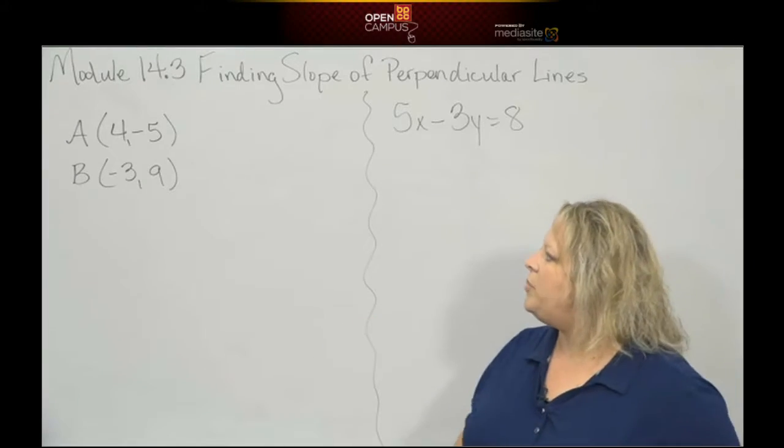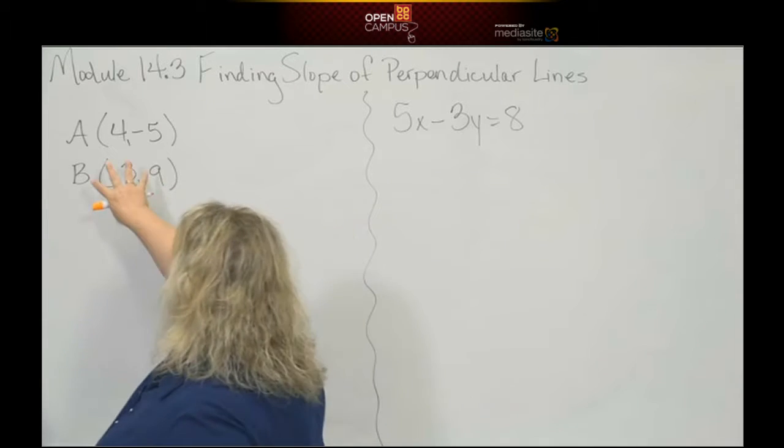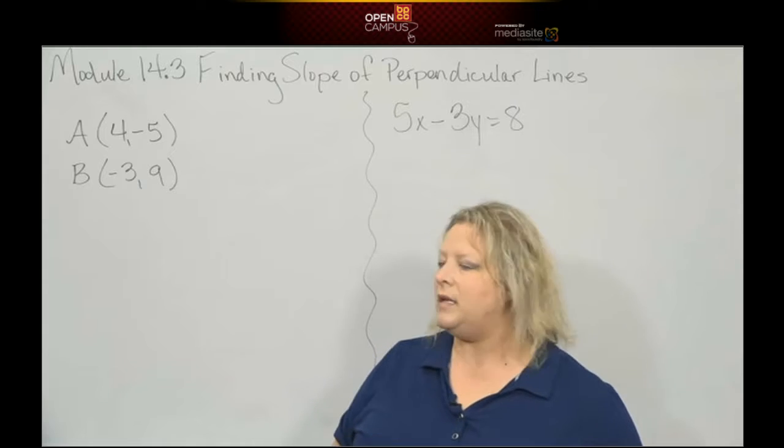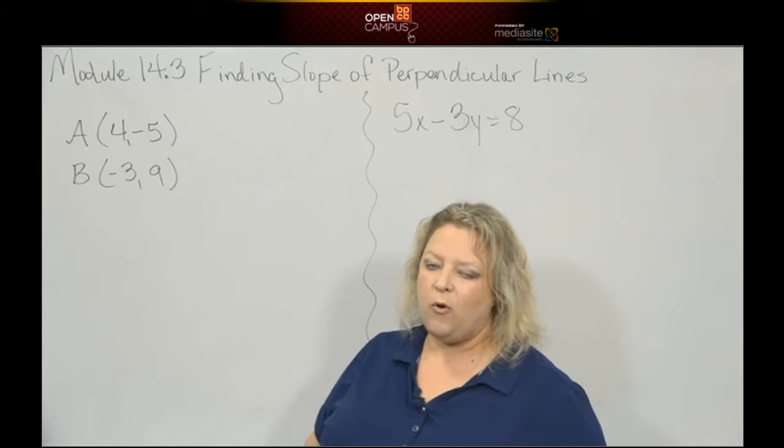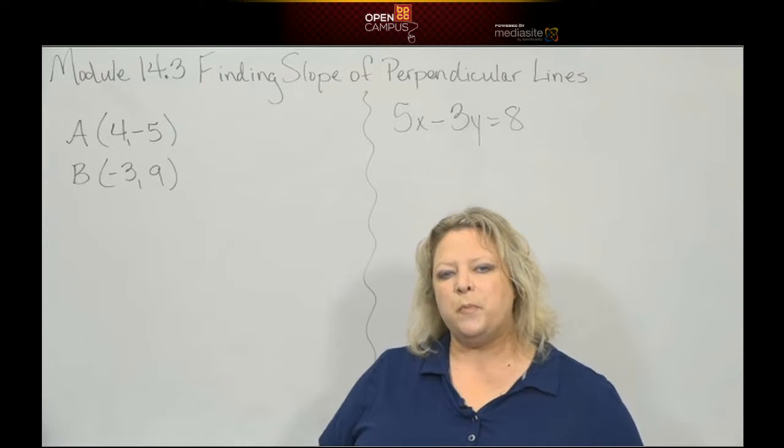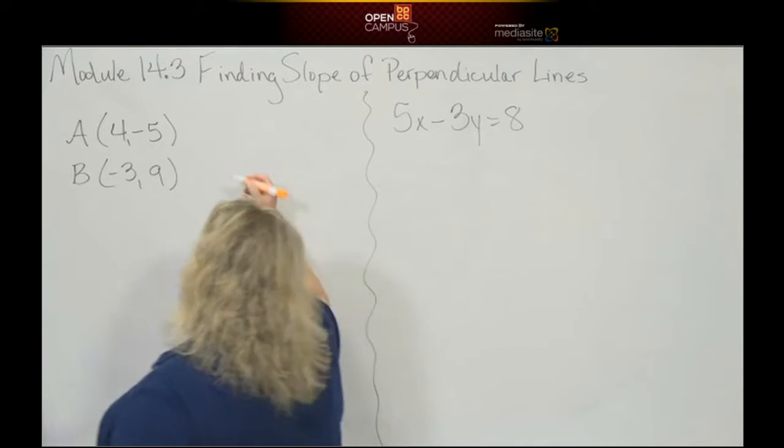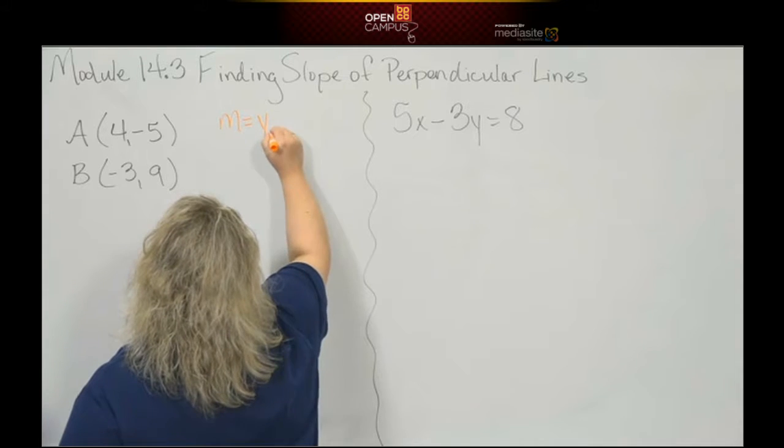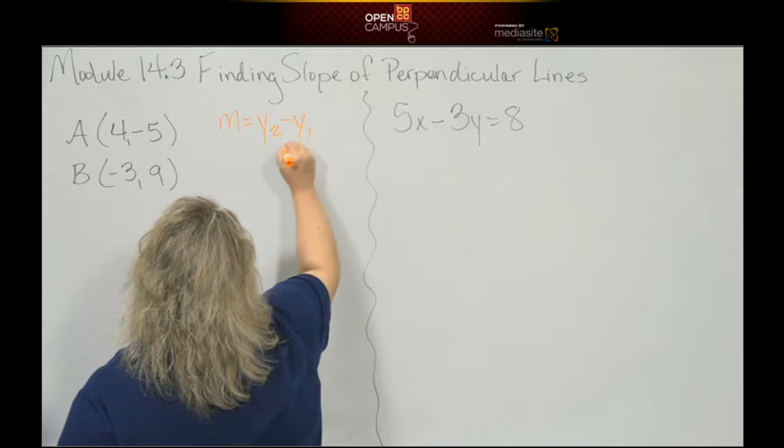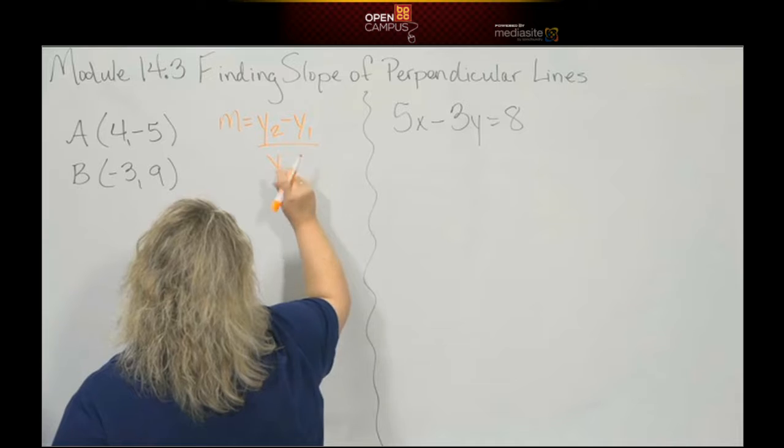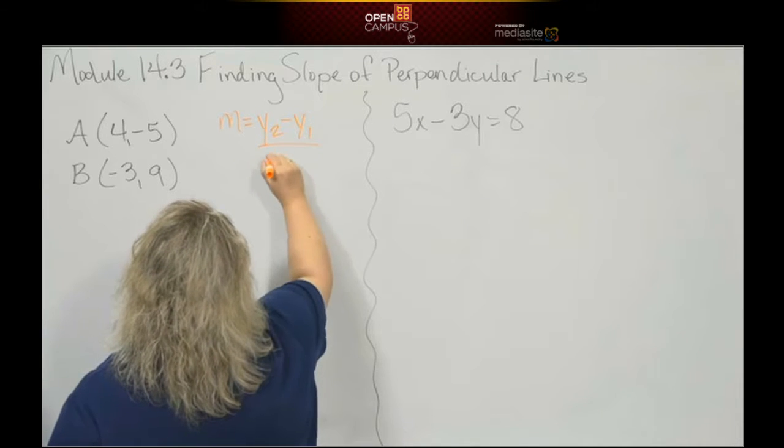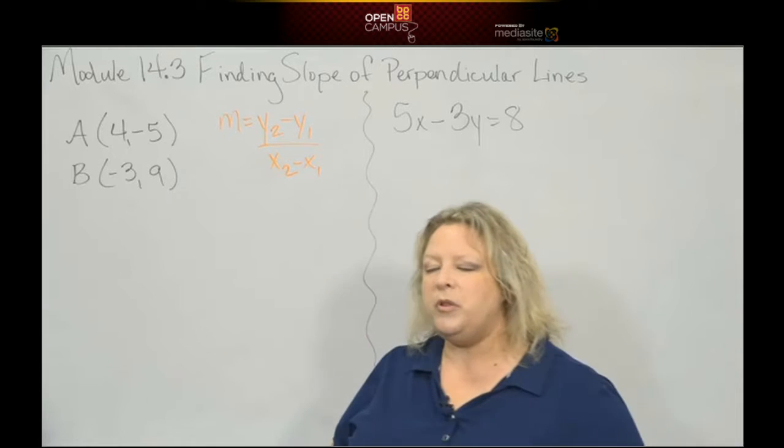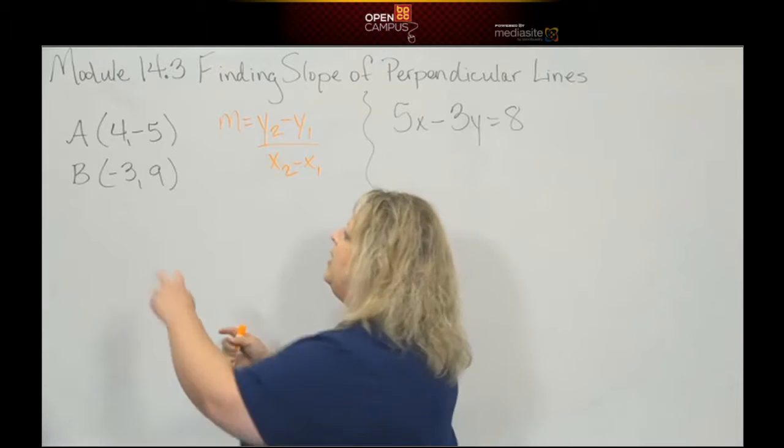Alright, let's do perpendicular. So I have two points, the same points I did for finding slope of parallel lines, but this time I'm going to find the slope that's perpendicular to this. So first, what do I have to do when I get these sets of points? Find the slope. So here is the slope formula again: y2 minus y1 over x2 minus x1.